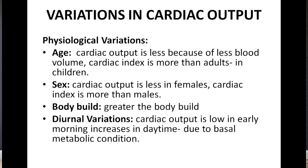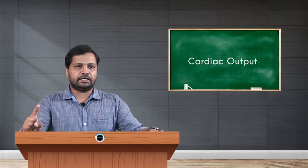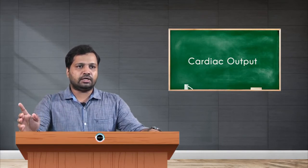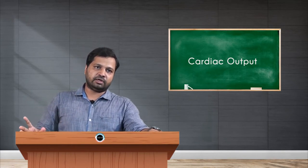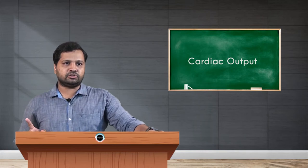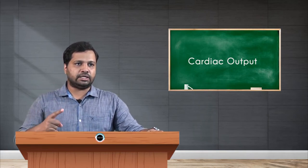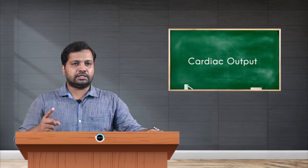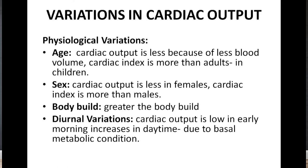The first physiological variation is age. Cardiac output is less in children because of their lower blood volume. However, the cardiac index is higher in children compared to adults, because the body surface area of children is less. So while cardiac output is lower in children, their cardiac index is proportionally higher.